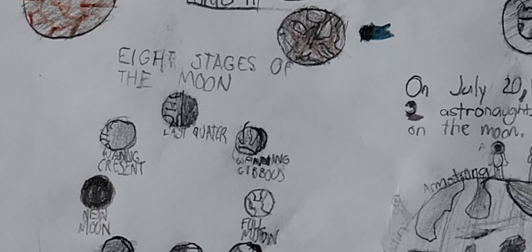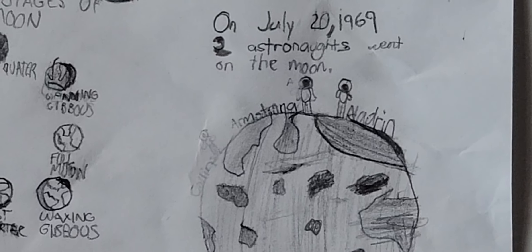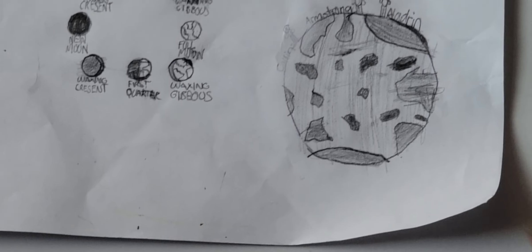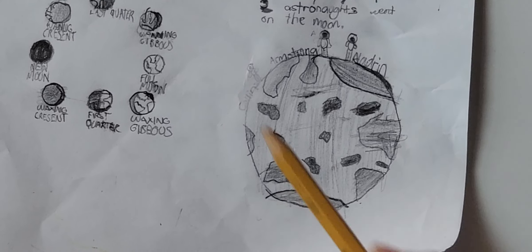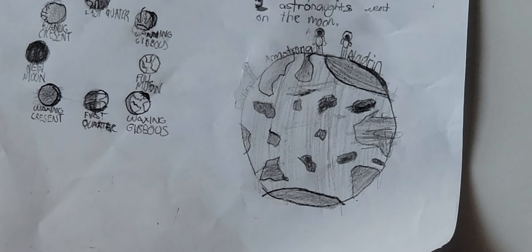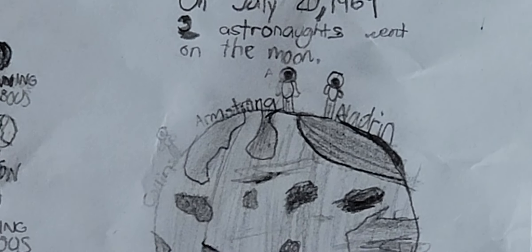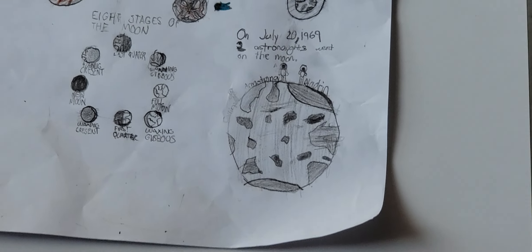On July 20, 1969, two astronauts were on the moon: Neil Armstrong and Buzz Aldrin. Neil Armstrong was the first astronaut to go on the moon, and Buzz Aldrin was the second astronaut. The other one's name is Michael Collins, and he was stuck in orbit.